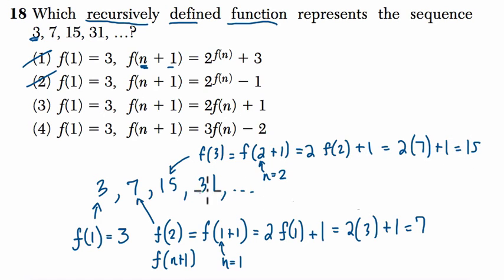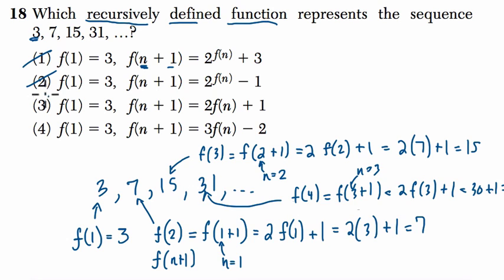Now the next step, f of 4, that's going to equal f of 3 plus 1. So now n is 3. So take the third step, add 1, and you get f of 4. So that's 2 times f of 3. f of 3 was just 15, but we'll write f of 3 for now, plus 1. What does that equal? 2 times f of 3, so 2 times 15, which is 30, plus 1. That's 31. And that's our fourth step in our sequence, so this is correct.